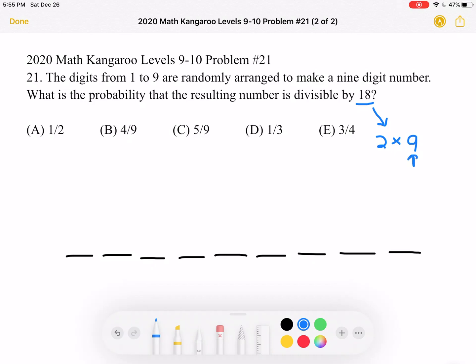You might remember that the trick for figuring out if a number is divisible by 9 is adding up all the digits of the number. If that sum is a multiple of 9, then the entire number is a multiple of 9.